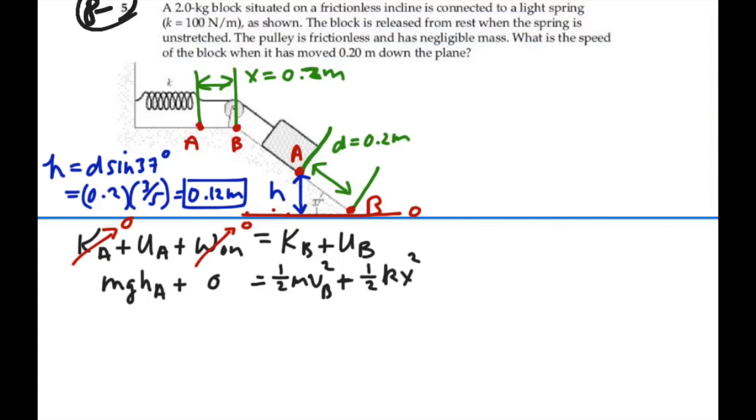We want to solve this for the velocity at B. Alright, so I'm going to subtract 1/2 kx² from both sides. So I now have 1/2 mass v_B² equals mgh_A minus 1/2 kx². Alright, let's multiply both sides by 2, divide by the mass,